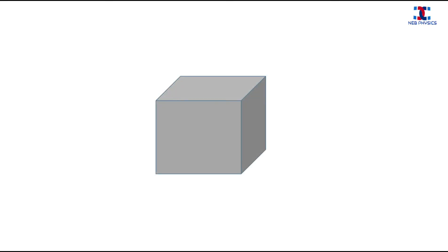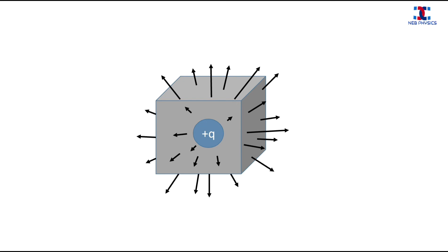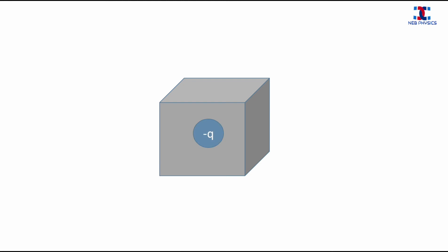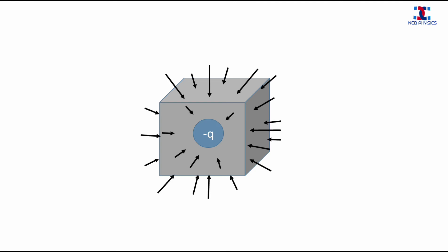Now let's come to our topic: electric flux. If you keep a positive charge inside a box, the electric lines of force come out of the surface of the box. And similarly, if you keep a negative charge inside a box, the electric lines of force pass into the box through the surface. This means that the electric lines of force can pass through almost all types of surfaces kept in their path.